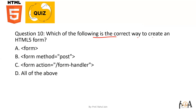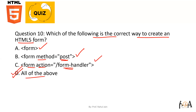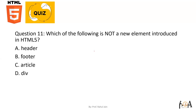Question number ten: which of the following is the correct way to create an HTML5 form? You can use 'form method equals to post' — that is a correct way. You can also use 'form action equals to form-handler' — that is also correct. So all of the above applies, and option D is the correct answer for creating a form in HTML5.